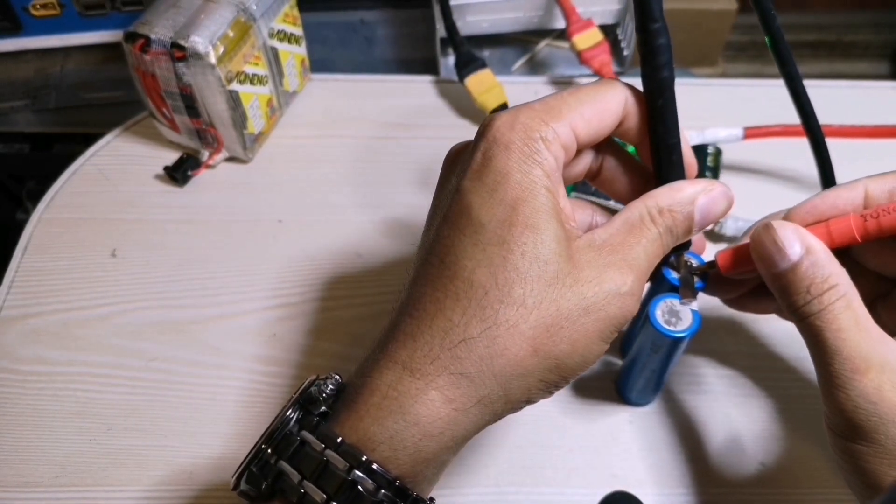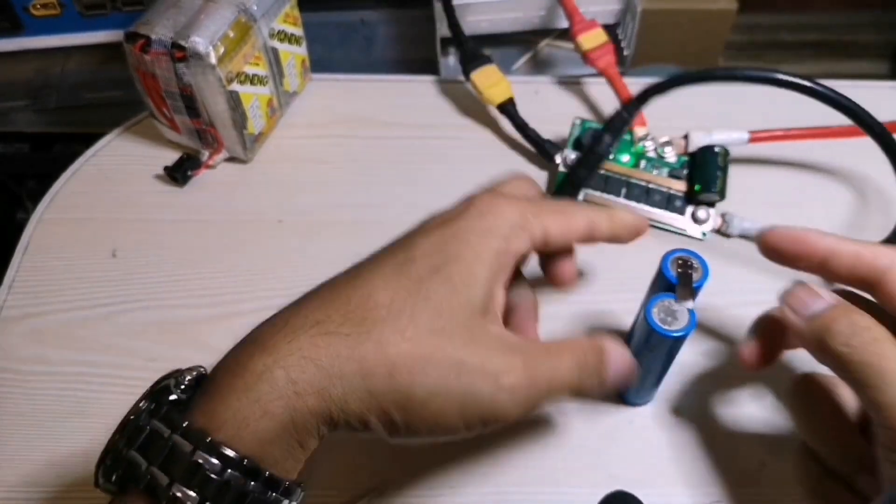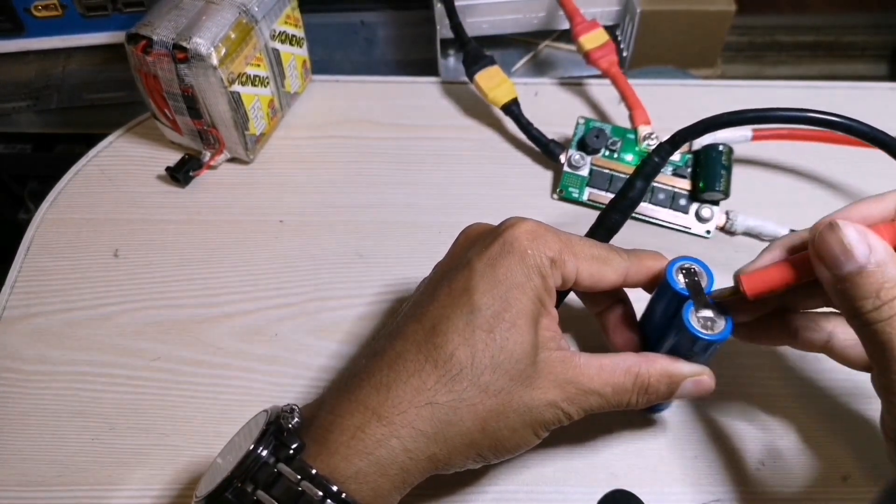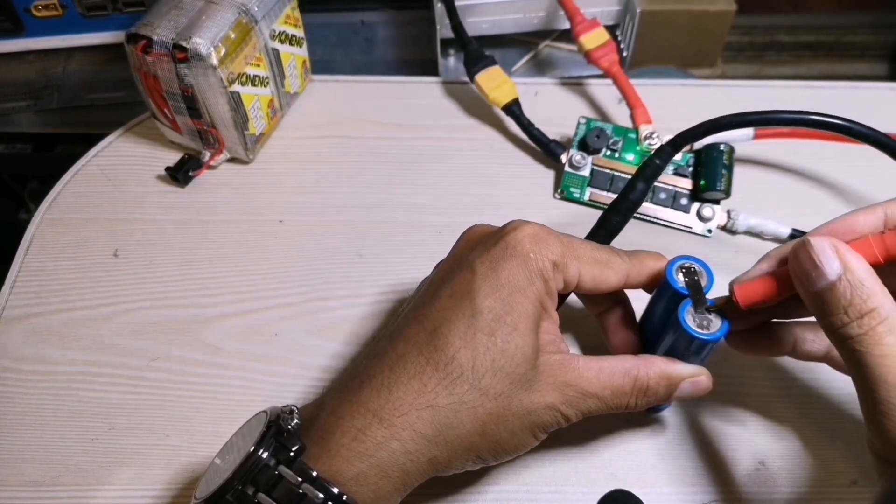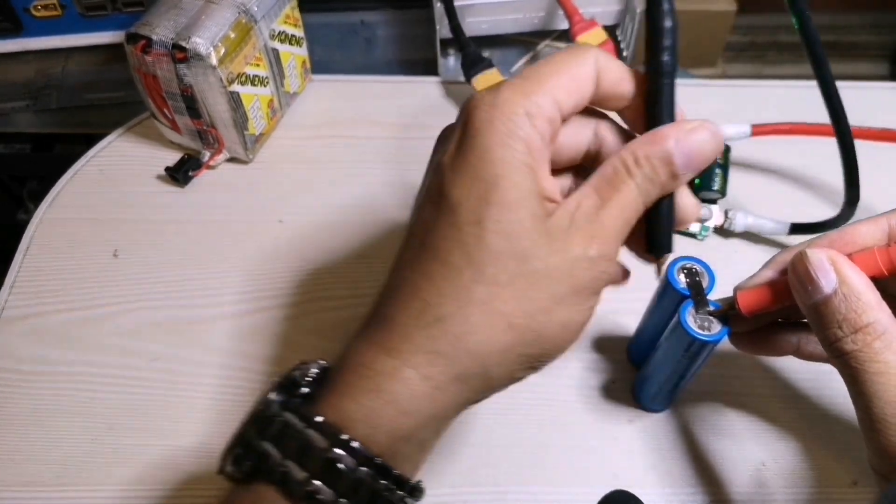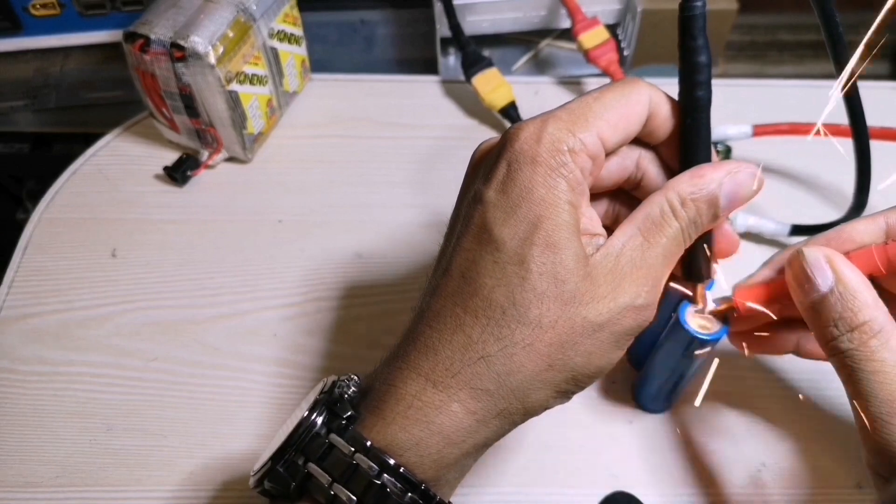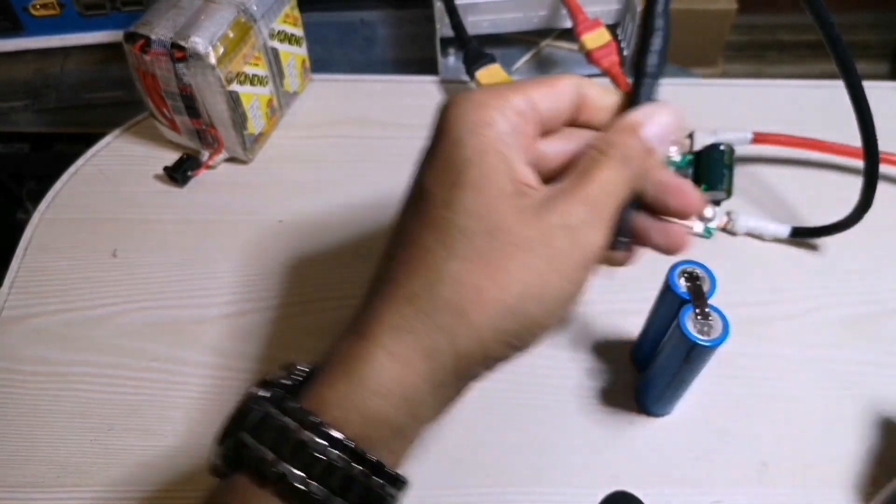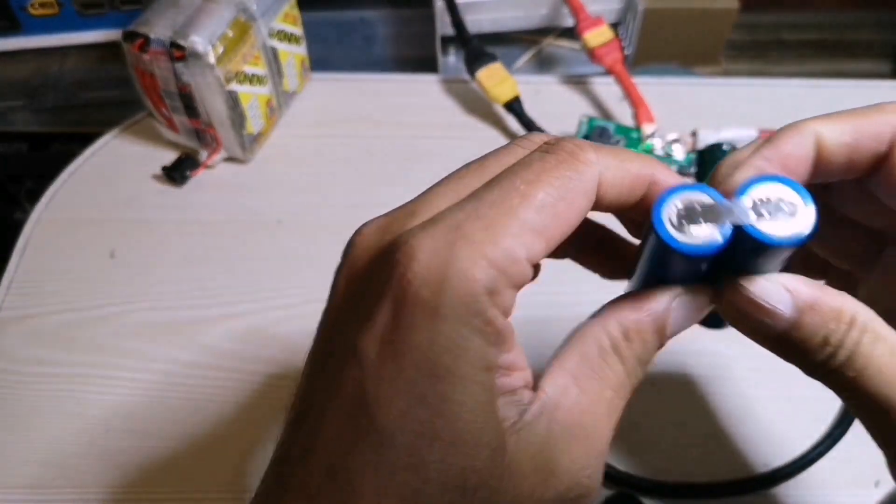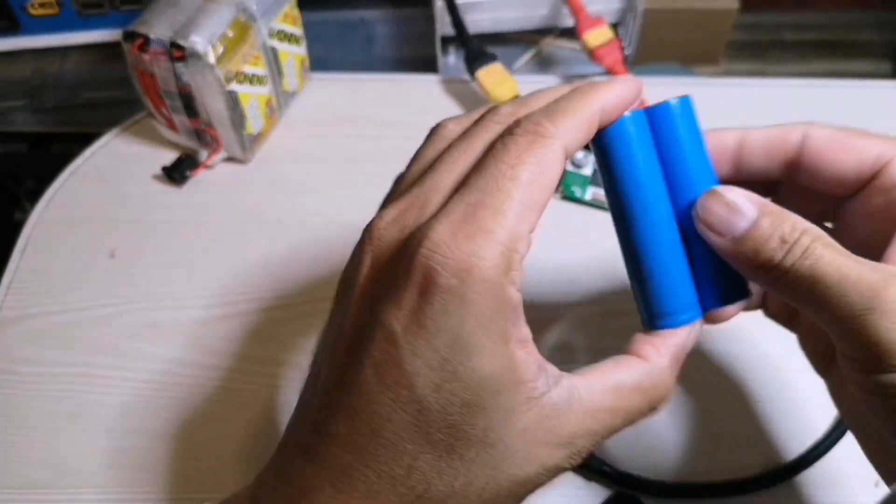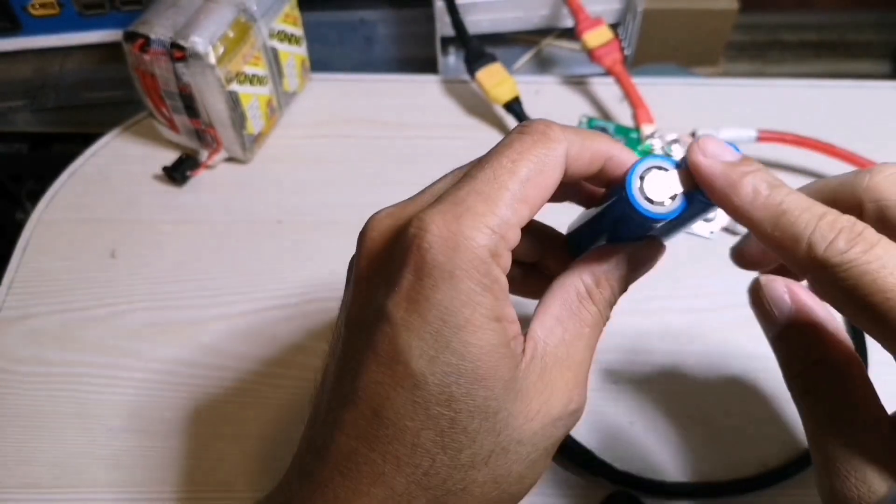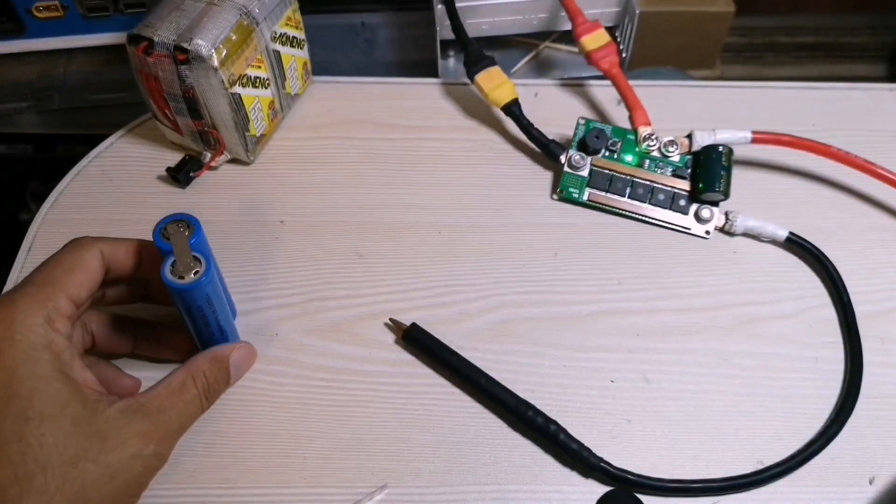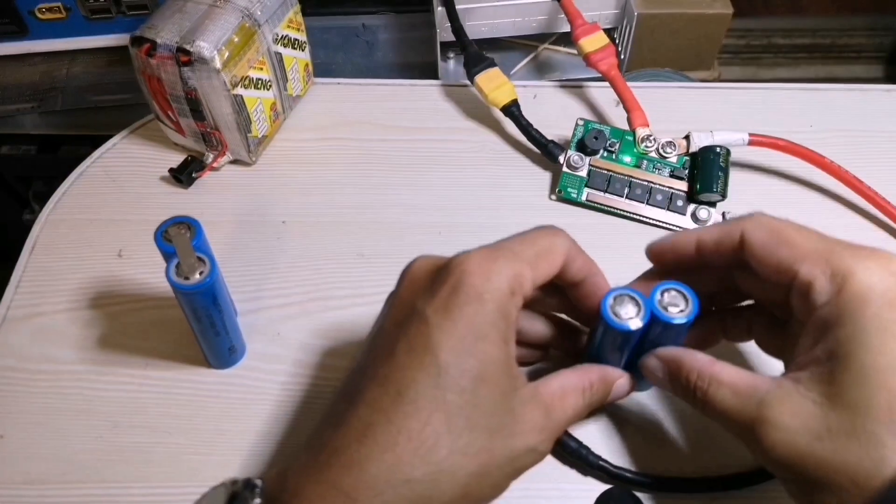Here we go. See it, hold it tight. So this is 2P, two cells in parallel connection.